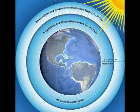Ozone plays a key role in the temperature structure of the Earth's atmosphere. Without the filtering action of the ozone layer, more of the sun's UVB radiation would penetrate the atmosphere and would reach the Earth's surface. Many experimental studies of plants and animals and clinical studies of humans have shown the harmful effect of excessive exposure to UVB radiation.